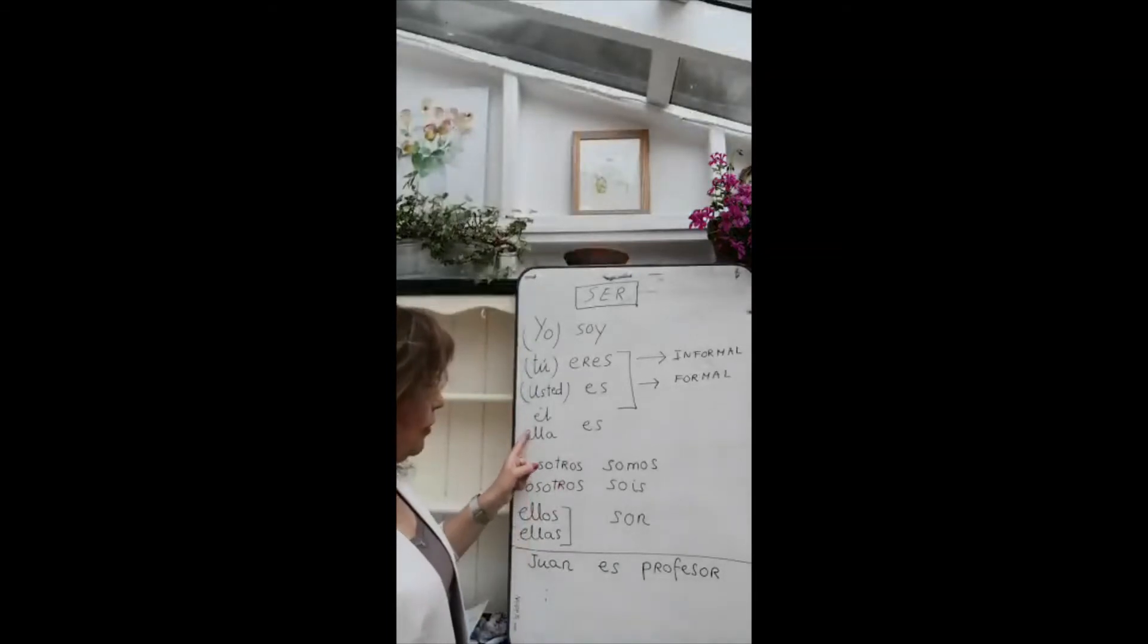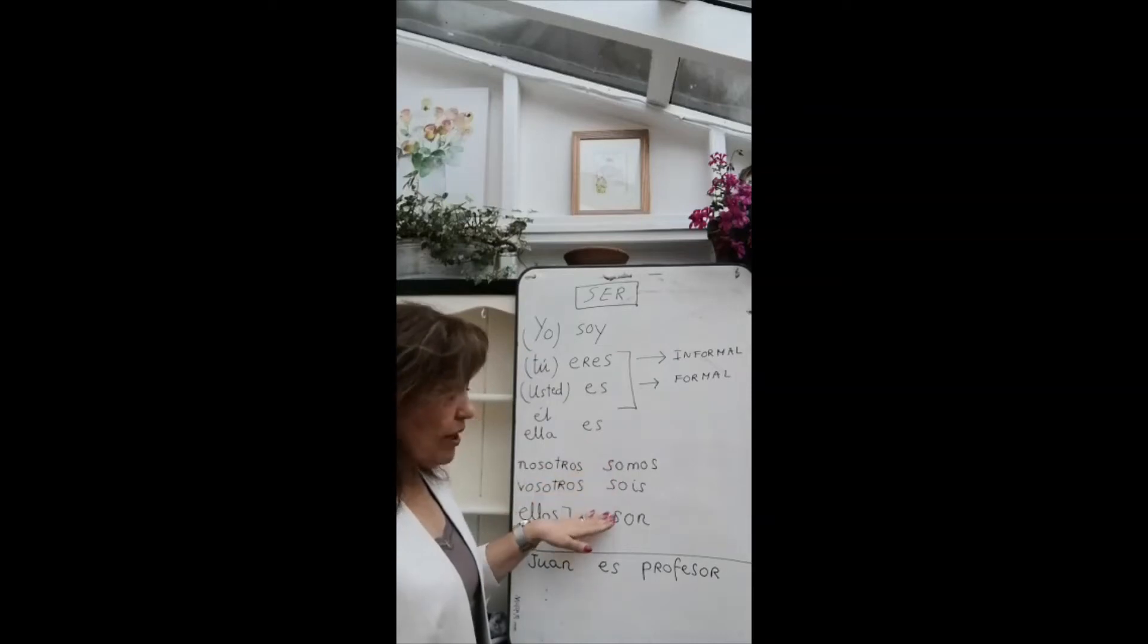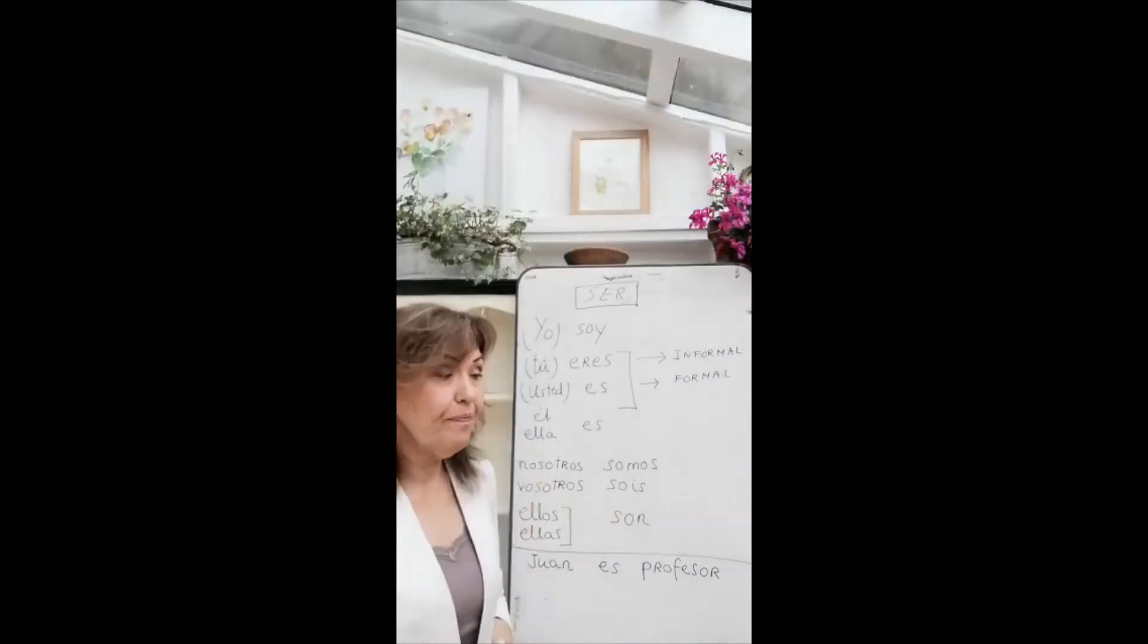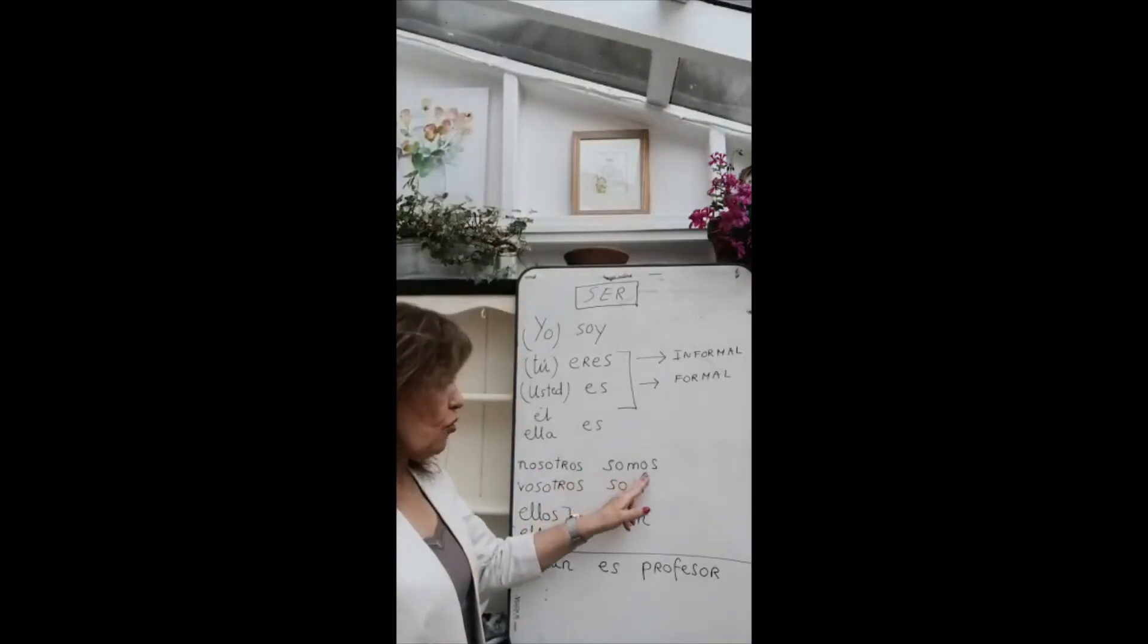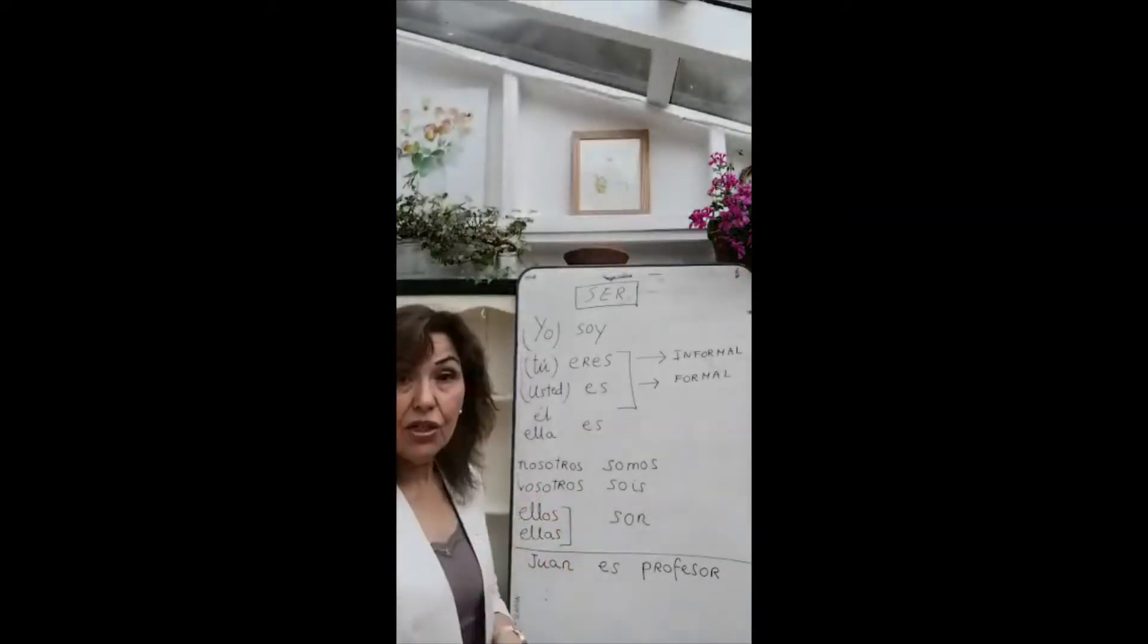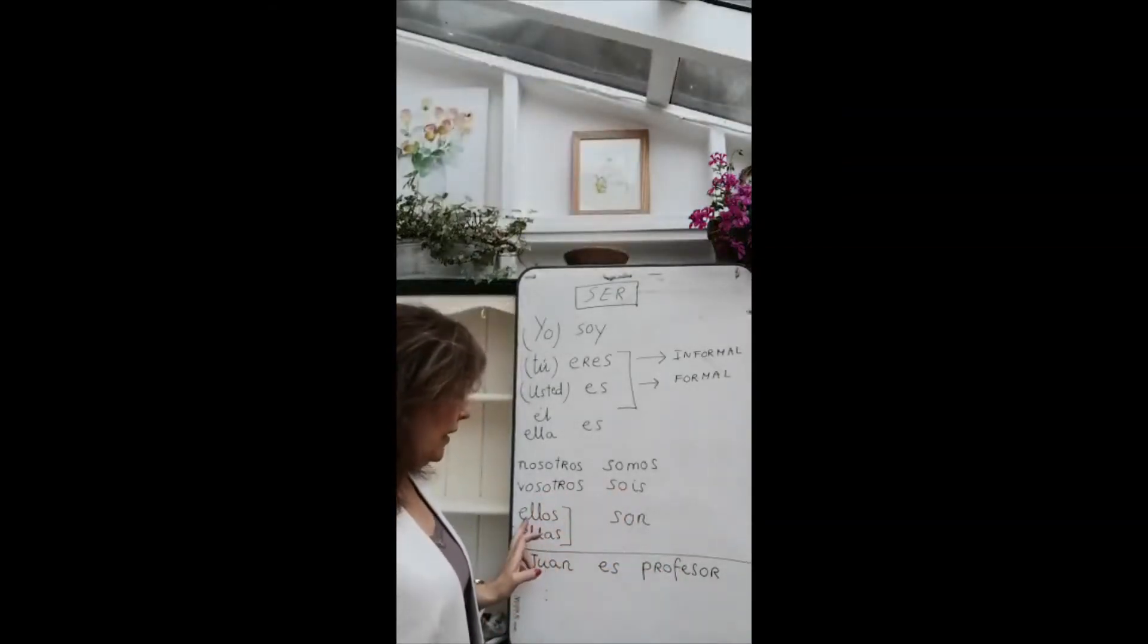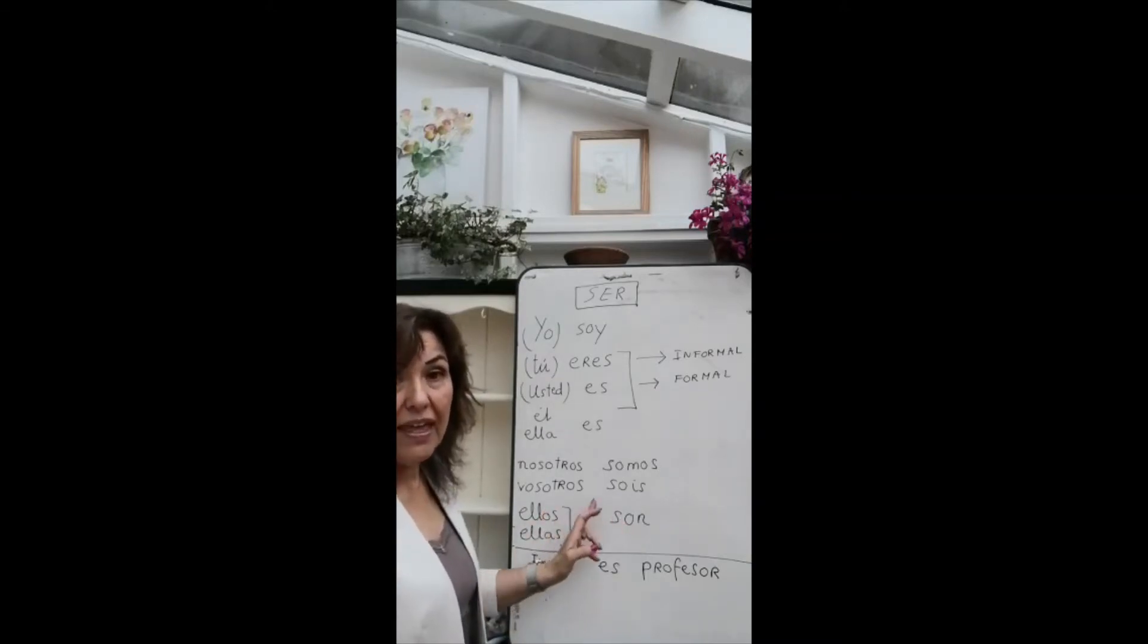And the third person, él es, he is, o ella es, she is. They are the singular. Now I have written here as well the plural that you don't have in your page. Nosotros somos, we are. Vosotros sois. Vosotros is you all, the plural of you, sois. You all are. And ellos and ellas son. Ellos masculine, ellas feminine, son. They are.